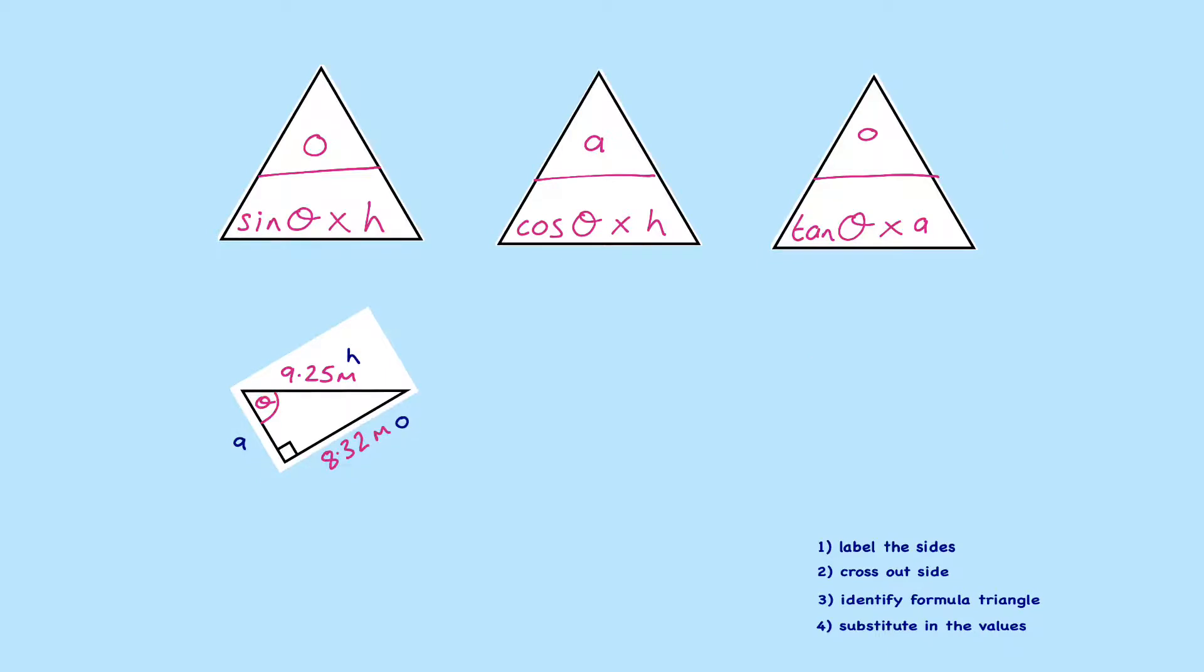Here's another one. So the sides are labelled H, O and A. Crossing out the side we don't need, which is of course A. Then identifying the formula triangle. I'm interested in O and H, because this is what we've been given, and that is the first triangle.